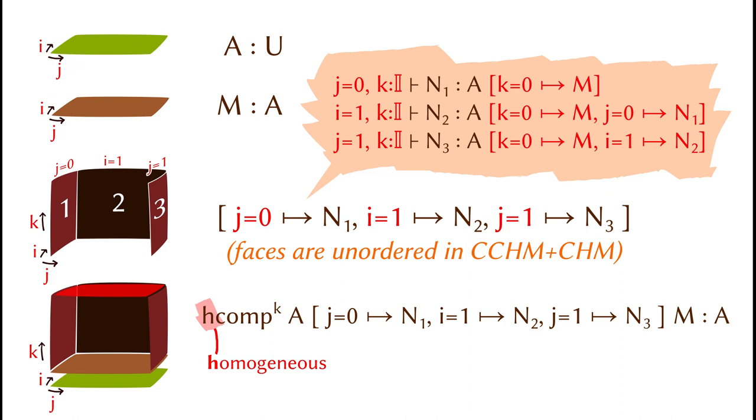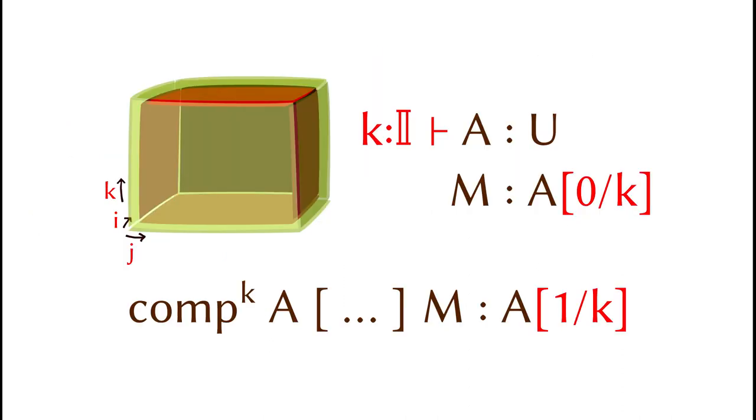For now, let's also check the syntax of heterogeneous composition. It is similar to the one we saw, except that the type can depend on the dimension K.